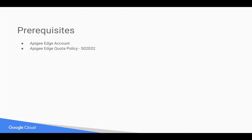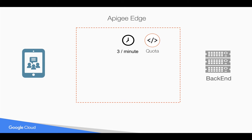You need basics of Apigee Edge quota policy — for that you can refer to the earlier 4-minute video. As seen in that earlier video, by default when you say 3 per minute in the quota policy, the policy actually sends more than 3 requests to the backend server. In the earlier case we saw almost 6 requests going to the backend server.